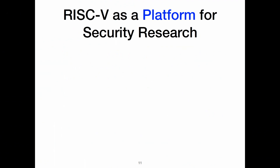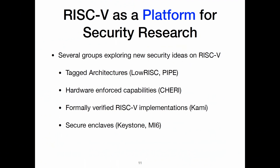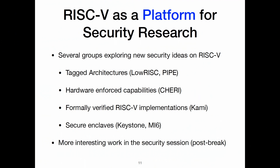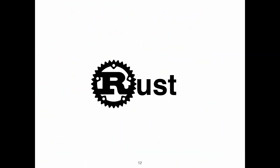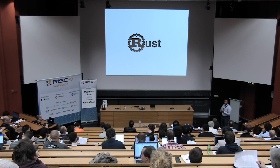RISC-V is becoming the de facto platform for security research. The center of mass is starting to shift. There are several groups exploring new security ideas on RISC-V — folks working on tagged architectures like my group, hardware-enforced capabilities, formally verified RISC-V implementations, and secure enclaves. There's also a bunch of interesting work in the security session right after the break. I think there's a lot of pretty interesting stuff happening on RISC-V and Rust, and it'll continue as people do more research.